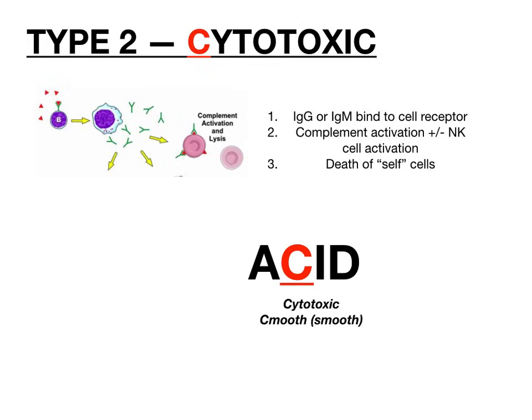Let me slow down for a second. So far we've talked about type 1 and type 2. Type 1 was allergic and anaphylaxis — all the A's, the A in ACID — and it involved IgE. Type 2 is cytotoxic, the C in ACID, and it involves smooth — with a C — antibody deposition. So far, both type 1 and type 2 involve antibodies.